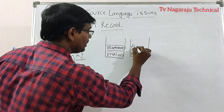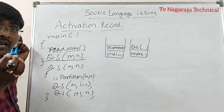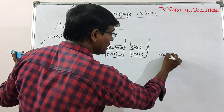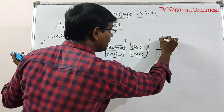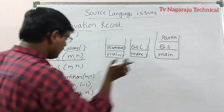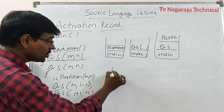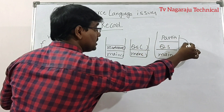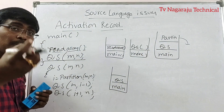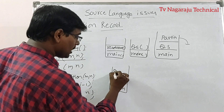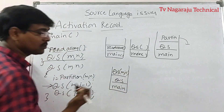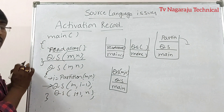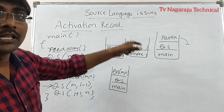Next, you are calling the quicksort function. Whenever you call the quicksort procedure, it calls partition. After completion of the partition, the partition is popped out from the stack. Again, it calls quicksort of m, i-1. Whenever you are calling this, again it calls the partition function. Once the partition is completed, that is popped out.